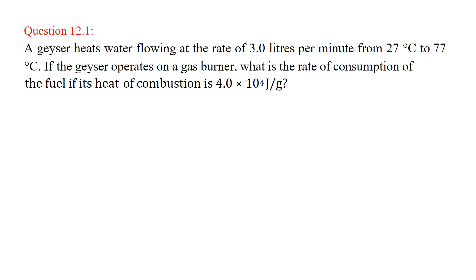A geyser heats water flowing at the rate of 3 liters per minute from 27 degree centigrade to 77 degree centigrade. The difference is around 50 degrees and this is the flow rate. If the geyser operates on a gas burner, what is the rate of consumption of fuel if its heat of combustion is given?